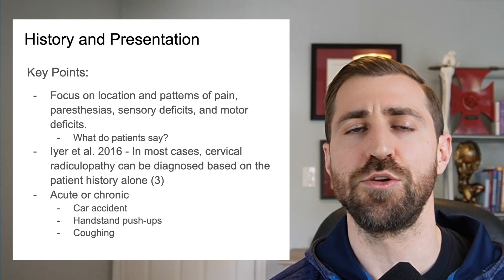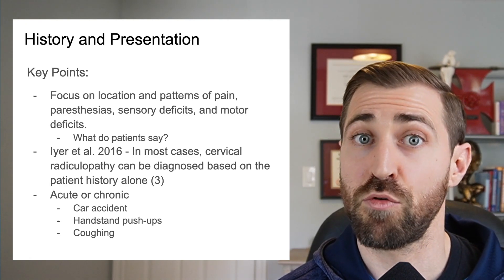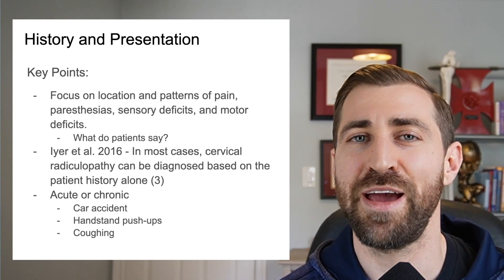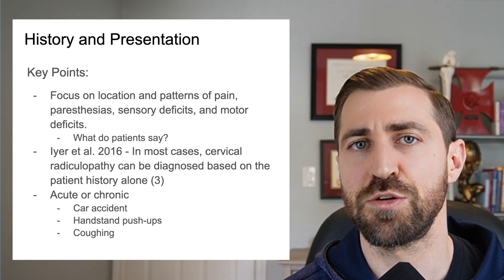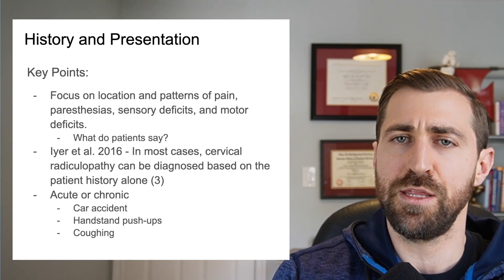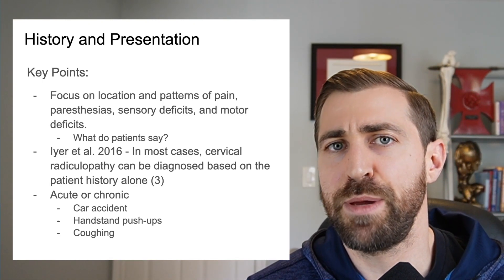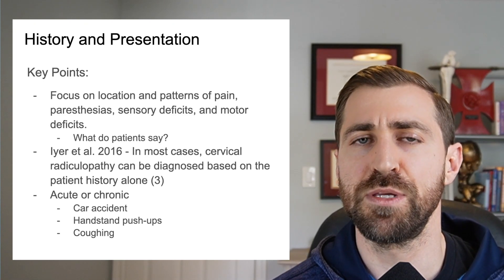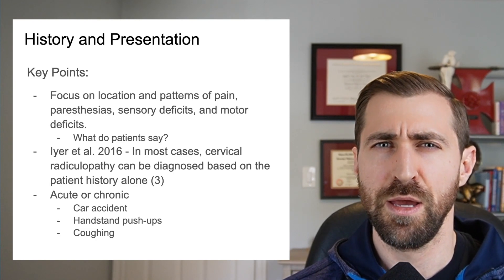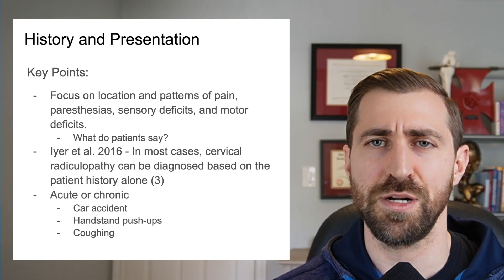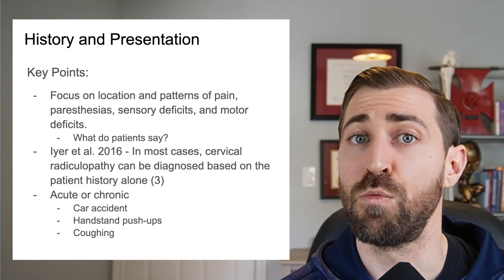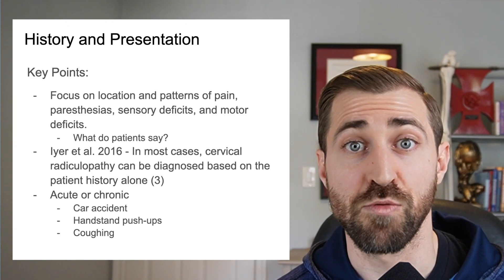These injuries can be either acute or chronic in nature. They can happen all at once — think about a car accident, a dropped barbell on the neck, or handstand pushups where the head hits the floor and the patient notices weakness and pain radiating down the arm. You may also have patients with very gradual onset: a little numbness and tingling in the fingertips over time that turns into pain, eventually a lot of arm pain, then neck pain that becomes really debilitating.